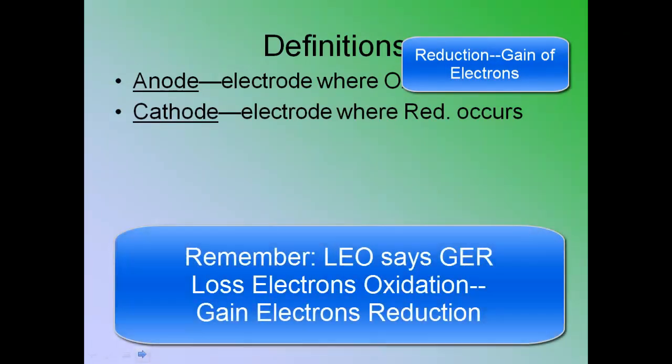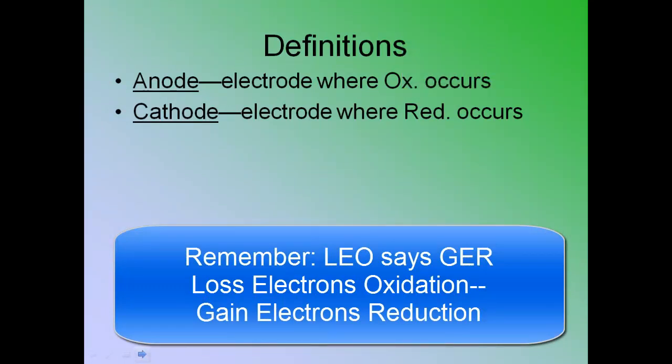So, the cathode, which is what gains electrons, is undergoing reduction. So, any of the metals that are there are gaining electrons. They're undergoing reduction.